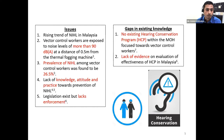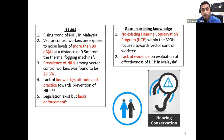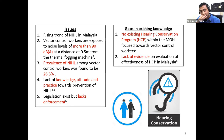The existing gap identified is that there is no existing hearing conservation program specifically targeting vector control workers. This hearing conservation program has to be job-specific, meaning every job requires a risk assessment done, and a specific hearing conservation program has to be developed based on that. The second gap is the lack of evidence on evaluation of hearing conservation program effectiveness in Malaysia itself.